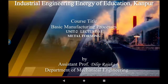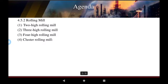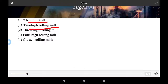Welcome to this course: Basic Manufacturing Process, Unit 2, Lecture 35 - Metal Forming. The agenda for today covers rolling mills: two high rolling mills, three high rolling mills, four high rolling mills, and cluster rolling mills.